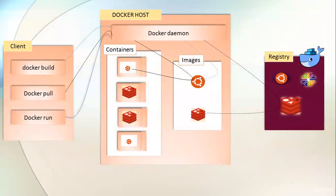Hello everyone, we are going to see Docker architecture. Docker architecture follows a client-server architecture, so here we have the Docker client and Docker server, which is called the Docker host. In Docker architecture, we have three main parts: client, Docker host, and registry.